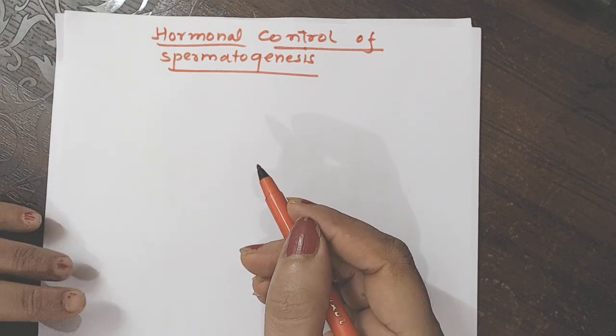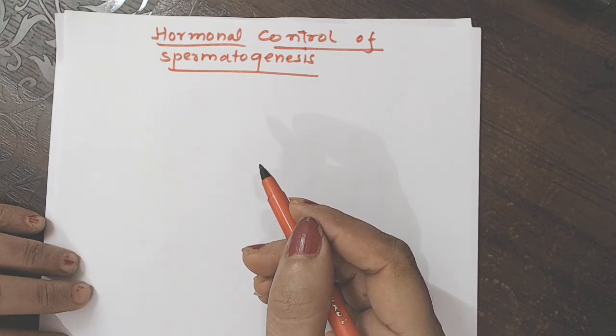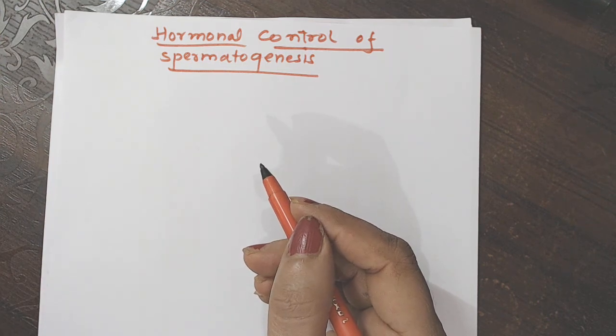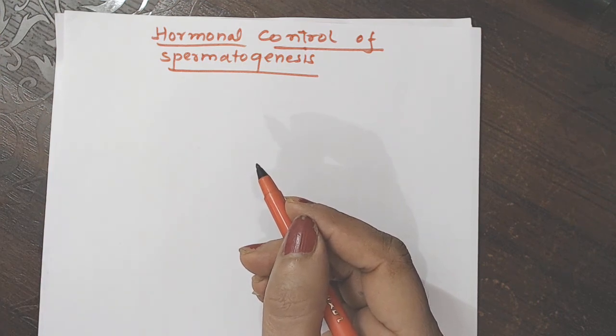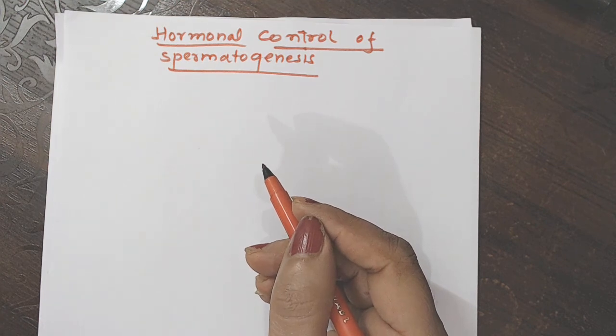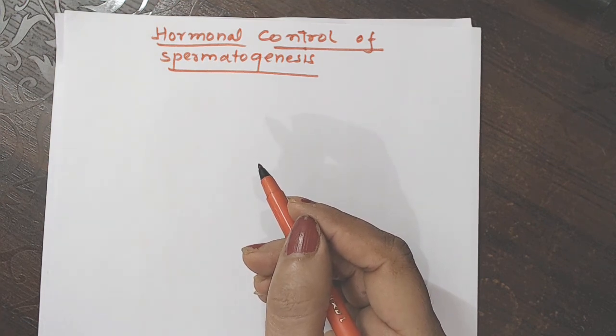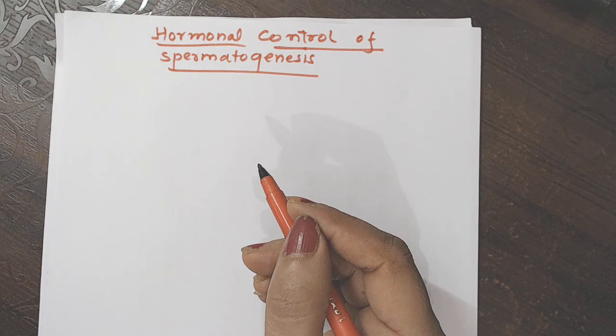first stimulation we got from the hypothalamus. It is the part of forebrain, brain ka part hai, which is neuro-secretory in nature